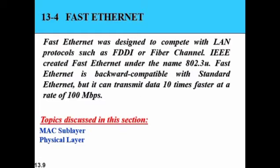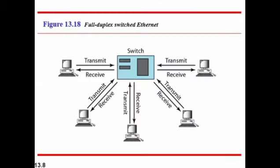To summarize: IEEE divided the data link layer into MAC and LLC sub-layers, defined four standards — 10Base5, 10Base2, 10BaseT, and 10BaseF — and introduced the concept of bridges to increase bandwidth strength and minimize collisions. This was all about the IEEE standards for Ethernet.